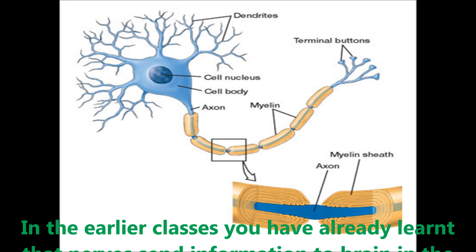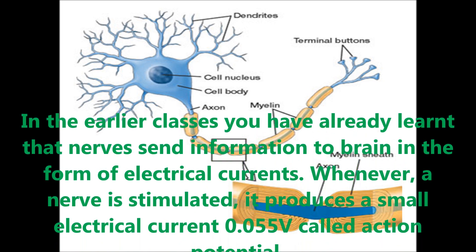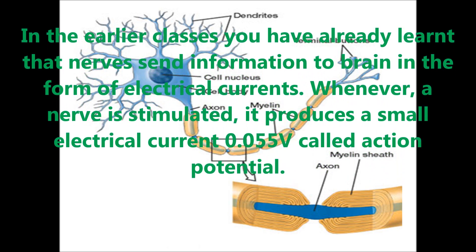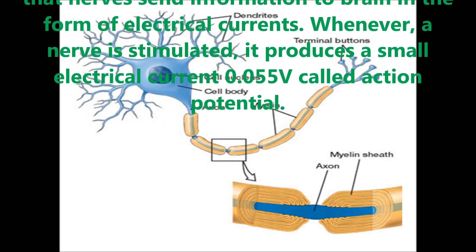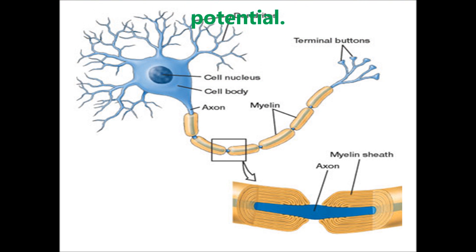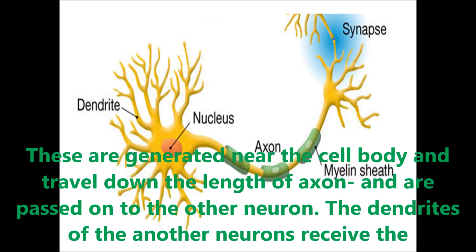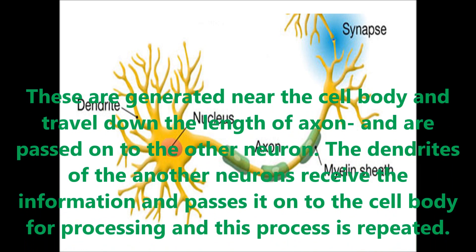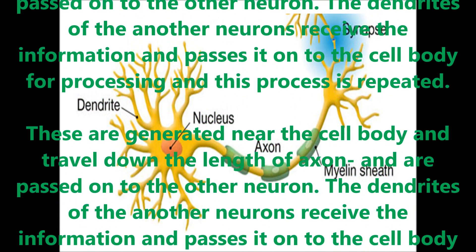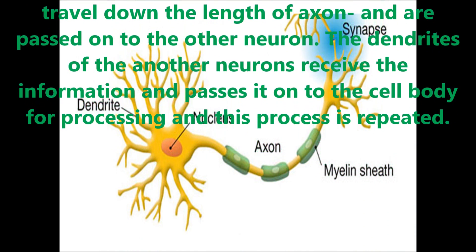In earlier classes you have learned about how nerves send information to the brain in the form of electrical current. Whenever a nerve is stimulated, it produces a small electrical current of 0.005 volts, called an action potential. These are generated near the cell body and travel down the length of the axon and are passed on to another neuron. The dendrites of the next neuron receive the information and pass it to the body of the nerve cell.